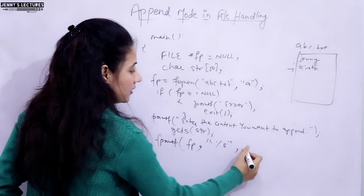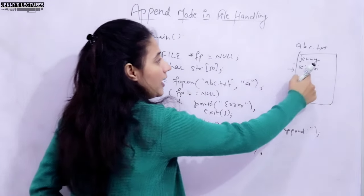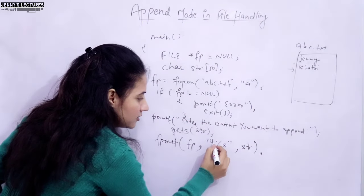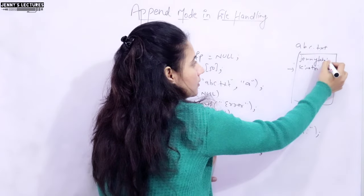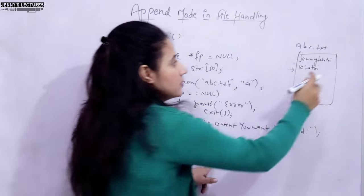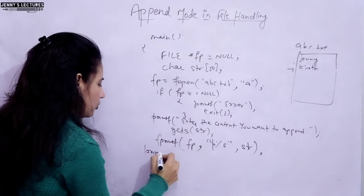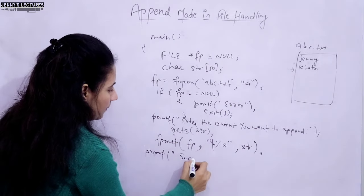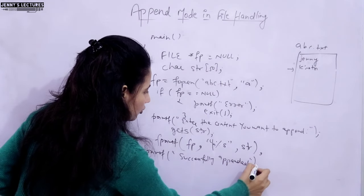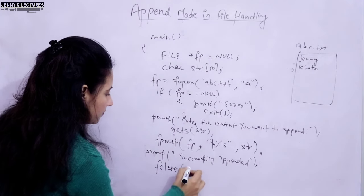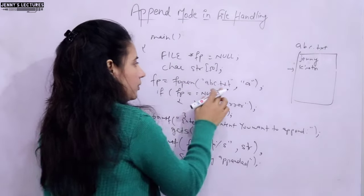With fprintf, you provide the file pointer, then the format specifier, then the variable holding the content — str in this case. If you want to add the content on a new line, provide '\n' before it. If you don't use '\n', the new text is appended on the same line. Print a success message and then close the file.